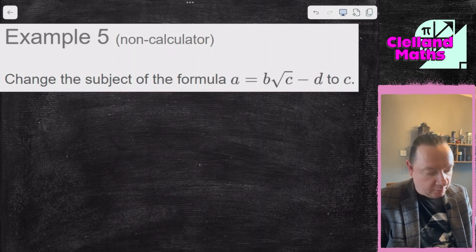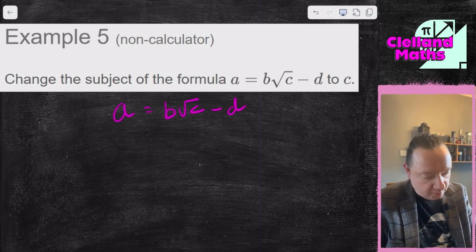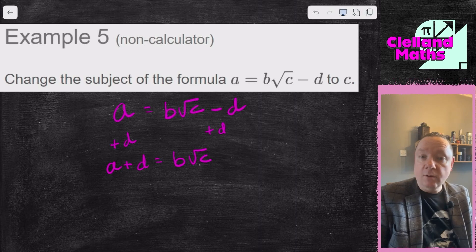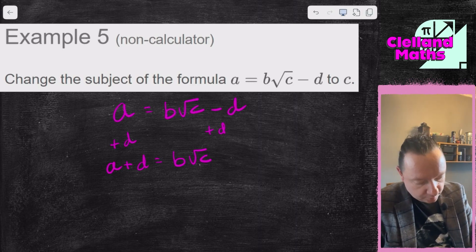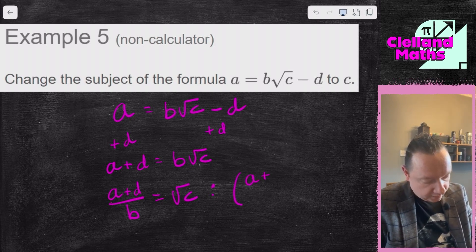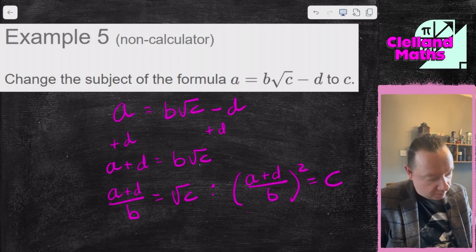Example 5: change the subject a = b√(c − d) to c. So a equals b root of c minus d. The c is attached to a root and a b. I'm going to add d to both sides to start with, to isolate: a plus d equals b root c. Now I can't make c the subject straight away — I need to divide by b first. So a plus d over b equals root c. Then square both sides: a plus d over b, all squared, equals c. So c equals (a plus d over b) all squared. And we're done.